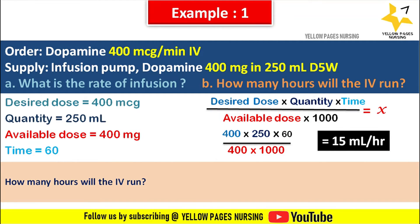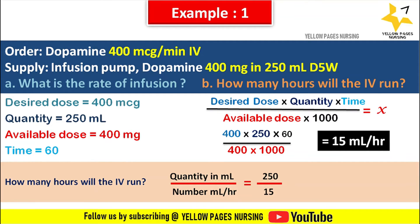Second question: how many hours will the IV run? The formula is quantity in ml divided by rate in ml per hour, which equals 250 ÷ 15 = 16.6, that is approximately 17 hours. Hence, the IV runs for 17 hours.